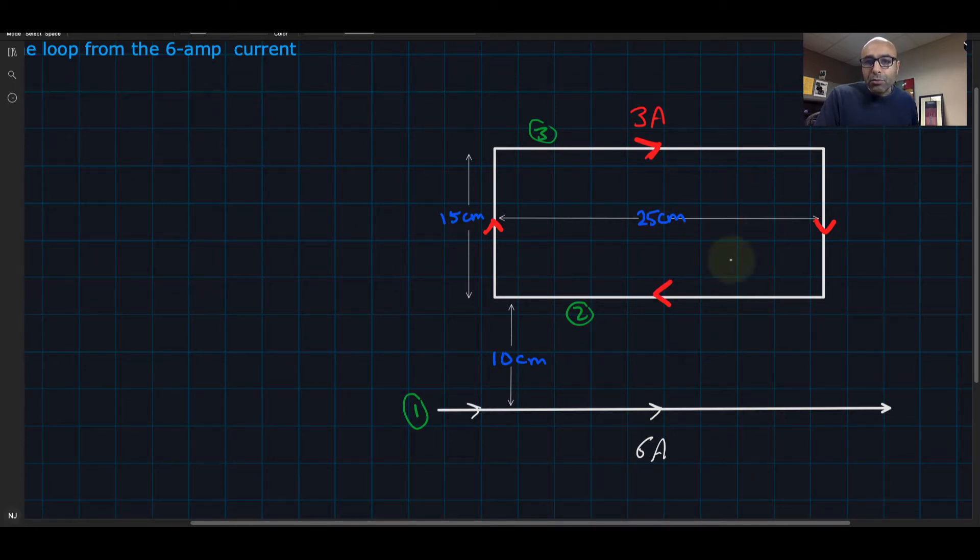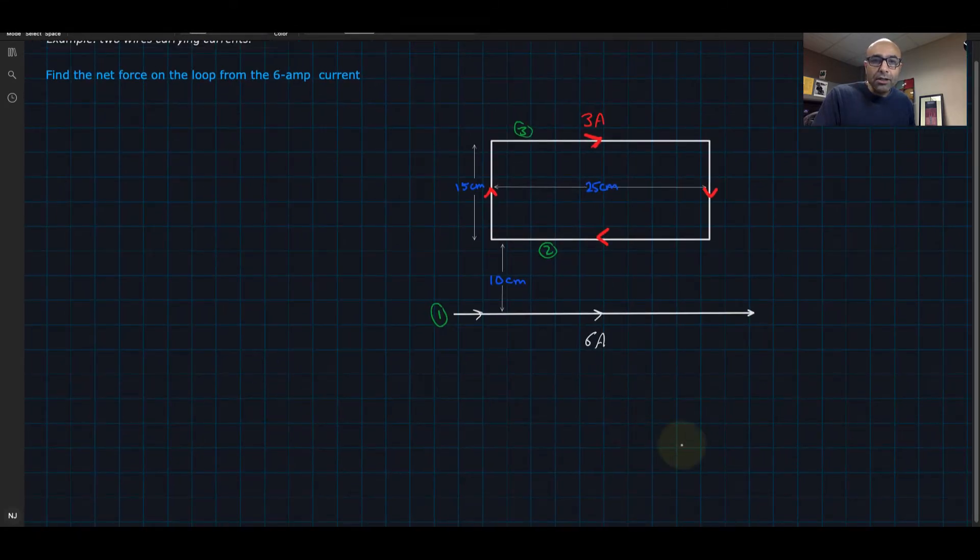In this example, we have a wire that carries a current of 6 amps going from left to right. Next to it, there is a loop that also carries a current of 3 amps going into the loop. We know if there are currents within the vicinity of each other, they act on each other by their magnetic fields with a force called the magnetic force on a current. So we need to find the net force on the loop from this current.